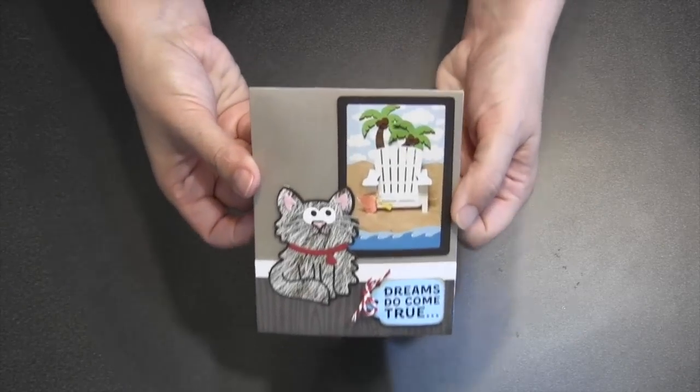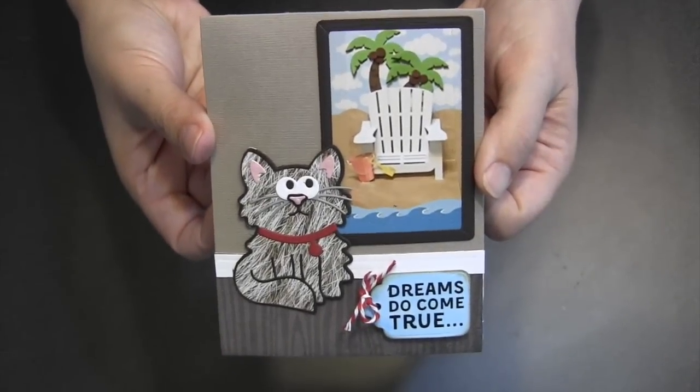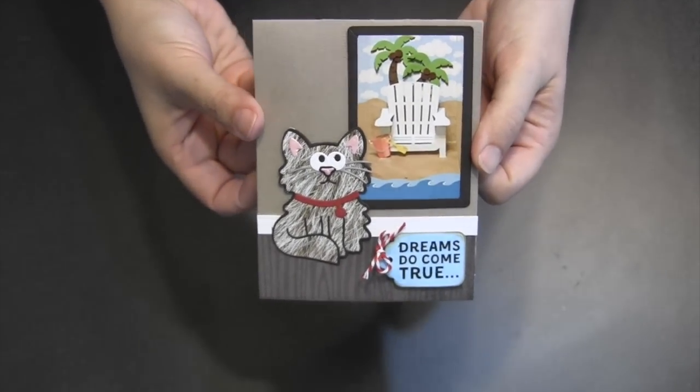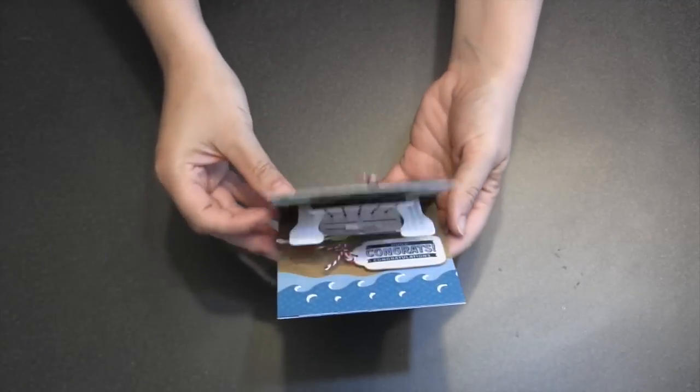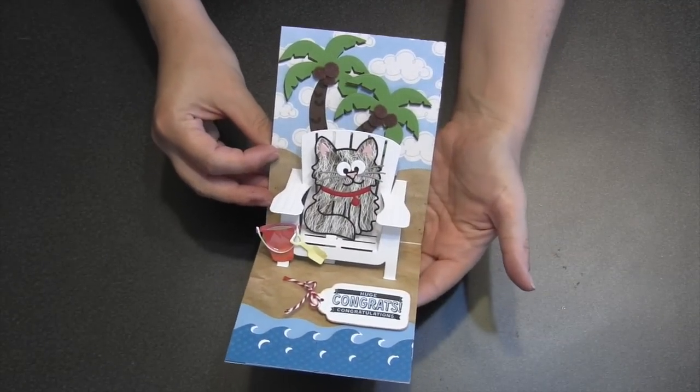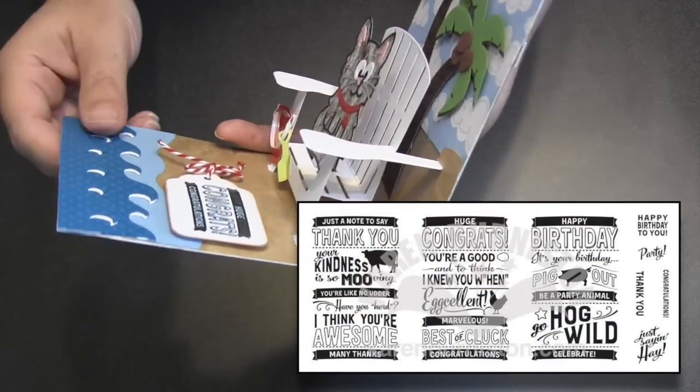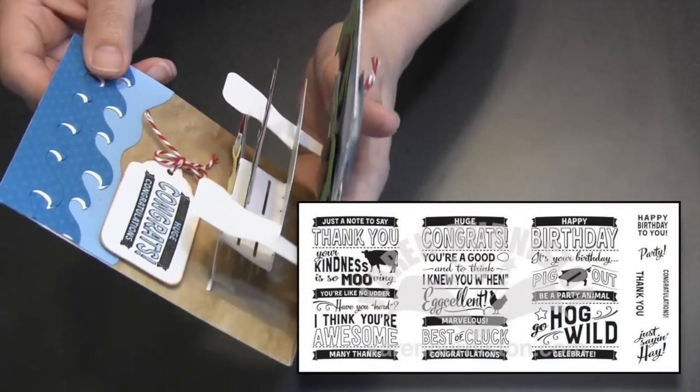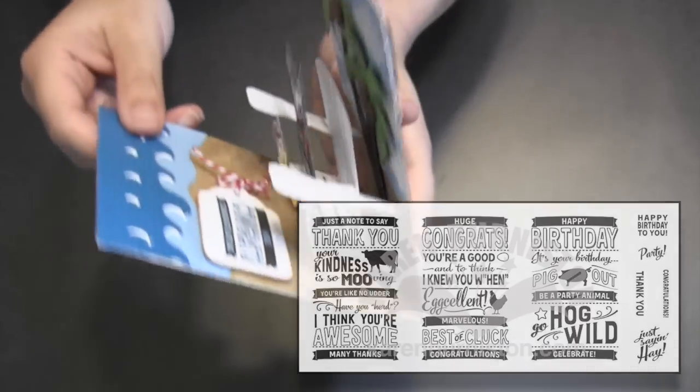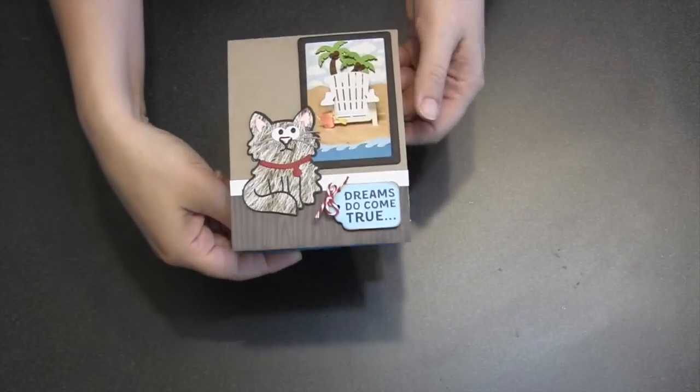I finished the card by computer generating the dreams do come true greeting for the front of the card. And then just cut it out with a tag die and tied a little bow through it with some twine. And then inside I used the farm greetings clear stamps with just some selective inking. I only wanted to use the huge congrats and the congratulations portion of that stamp for my tag on the inside of the card.